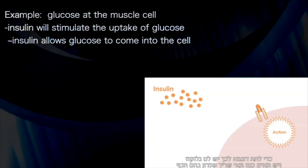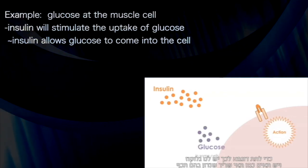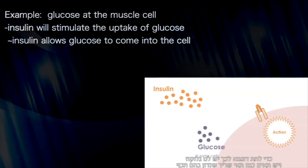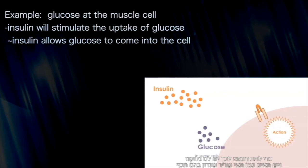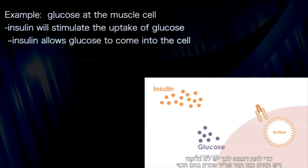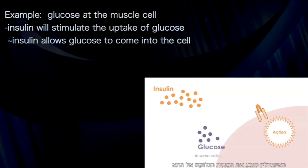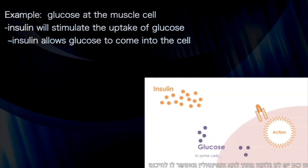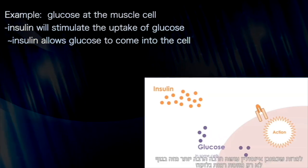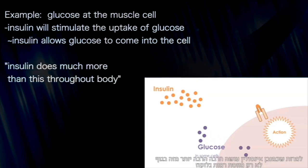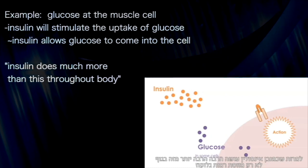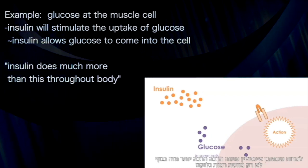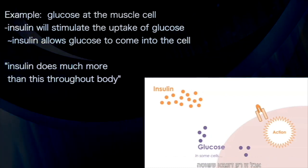To create an example of this, we have glucose. Some cells, like muscle, will have insulin stimulate the uptake of glucose. Here we have glucose outside the cell, and now insulin allows the glucose to come in. Although insulin does much more throughout the body than just regulate glucose levels — but this is just an easy example.